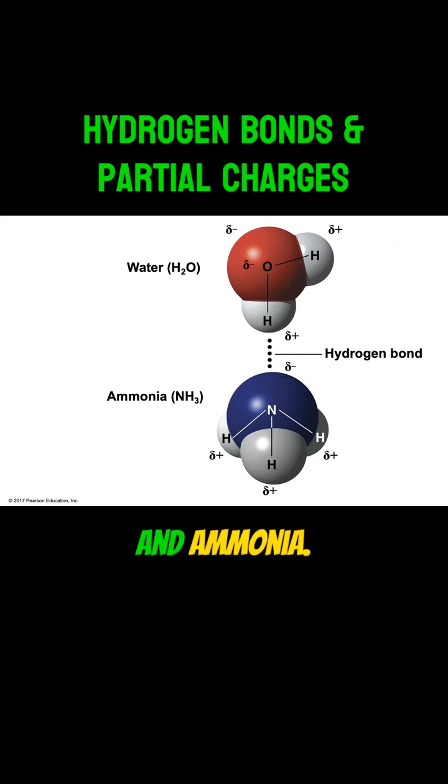Now look between water and ammonia. We see a dotted line denoting the hydrogen bond. The hydrogen bond is forming between the hydrogen of the water molecule, which is covalently bonded to the oxygen, and the nitrogen in ammonia.